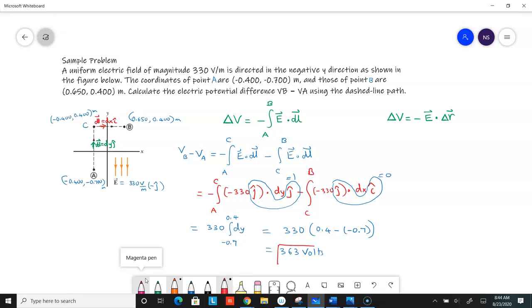So that's the potential difference between points B and A. If you're thinking, isn't this a long way to do something that was so simple, you're absolutely correct. And you could have very well said, well, this is the distance D that really matters, the distance D that's parallel to the electric field, and that's 1.1 meters.